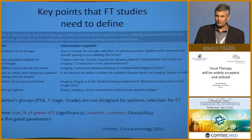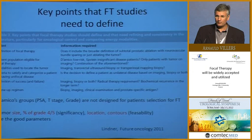The best parameters for patient selection would include tumor size and percentage of grade 4-5, which relates to cancer significance, plus location and contours for feasibility. These are the appropriate parameters, and future focal therapy meetings should address these parameters for focal therapy selection.